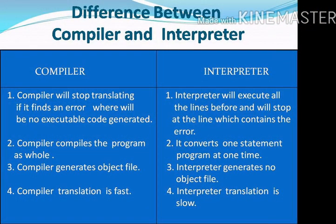The next slide contains the difference between compiler and interpreter. A compiler will stop translating if it finds an error, and no executable code will be generated. But an interpreter will execute all the lines before the error and will stop at the line which contains the error.